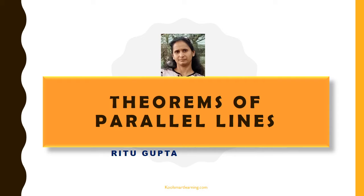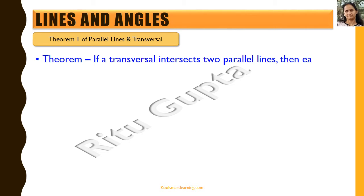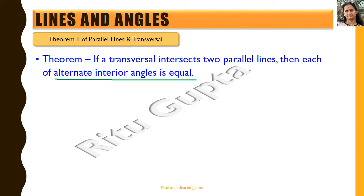Hello friends, we'll be discussing theorems of parallel lines in this session. Let's look at the first theorem of parallel lines and transversal. The theorem says: if a transversal intersects two parallel lines, then each of the alternate interior angles is equal. Let's first draw two parallel lines and a transversal.